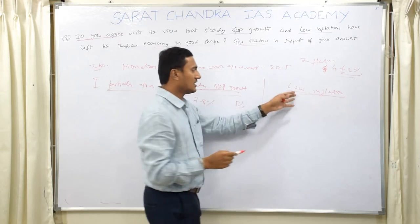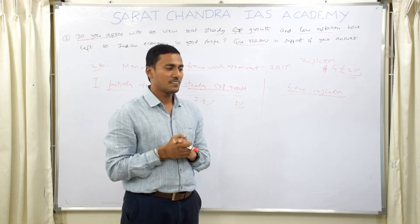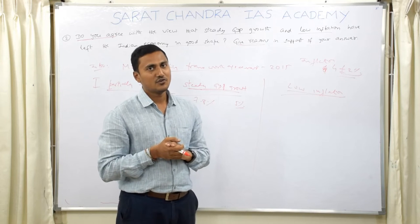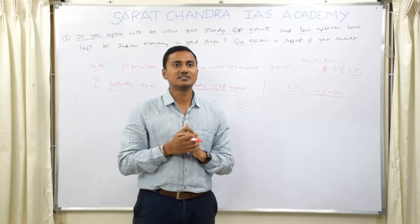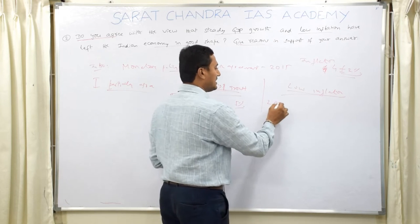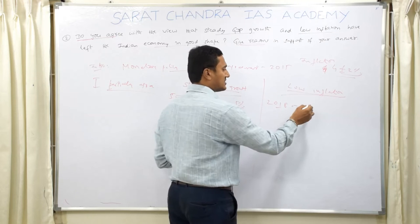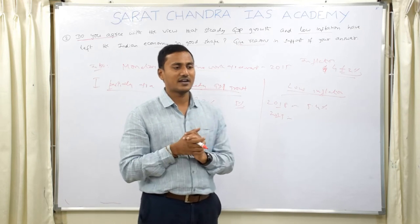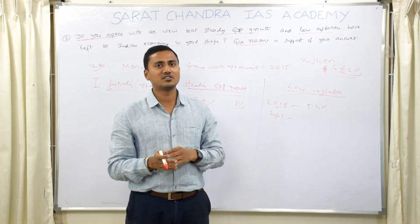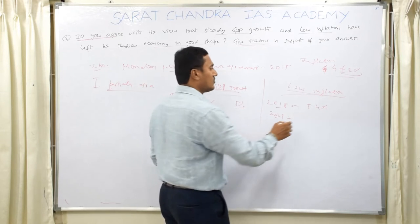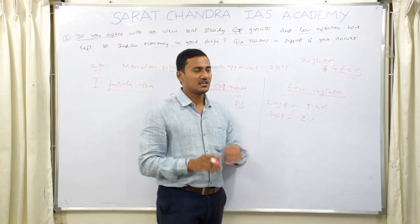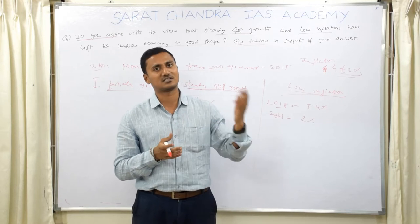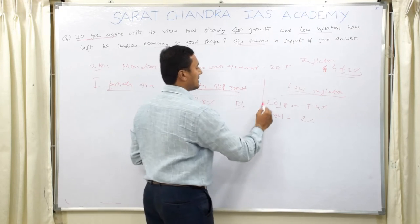For low inflation — before 2014, inflation in India used to be pretty high. However, in 2018, the inflation rate was around 5.4%, and in 2019 in the last few months it was around 2% to 2.5%. So in the last 5 years, India's inflation is considerably low compared to the previous period. This statement is also proved. Now you have to discuss how the Indian economy is in good shape — what aspects the steady GDP growth helped, and also what areas it could not help.